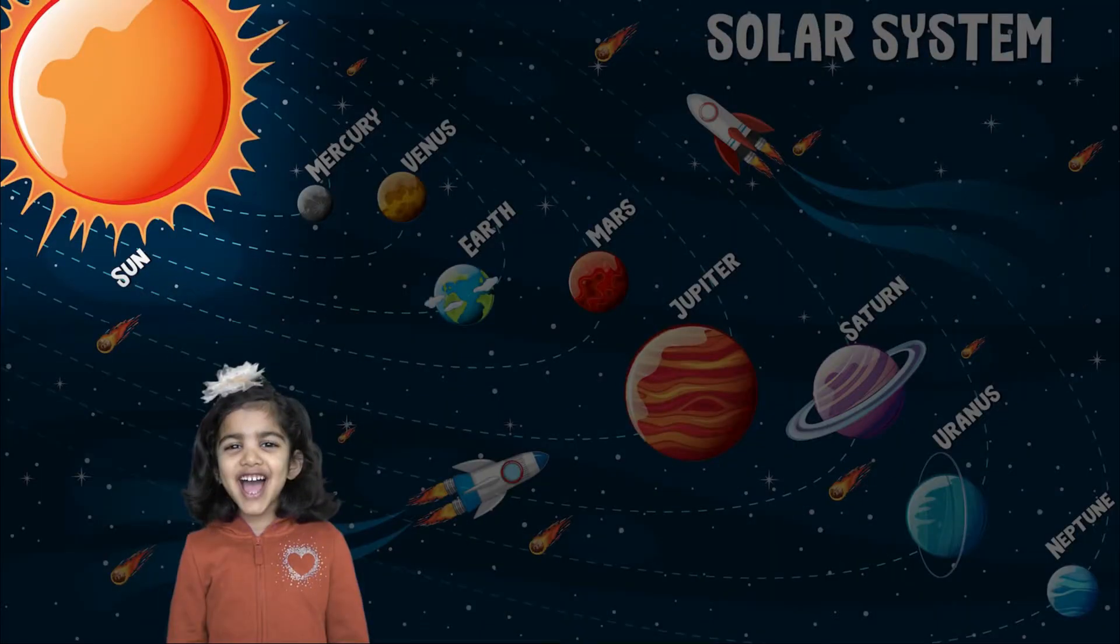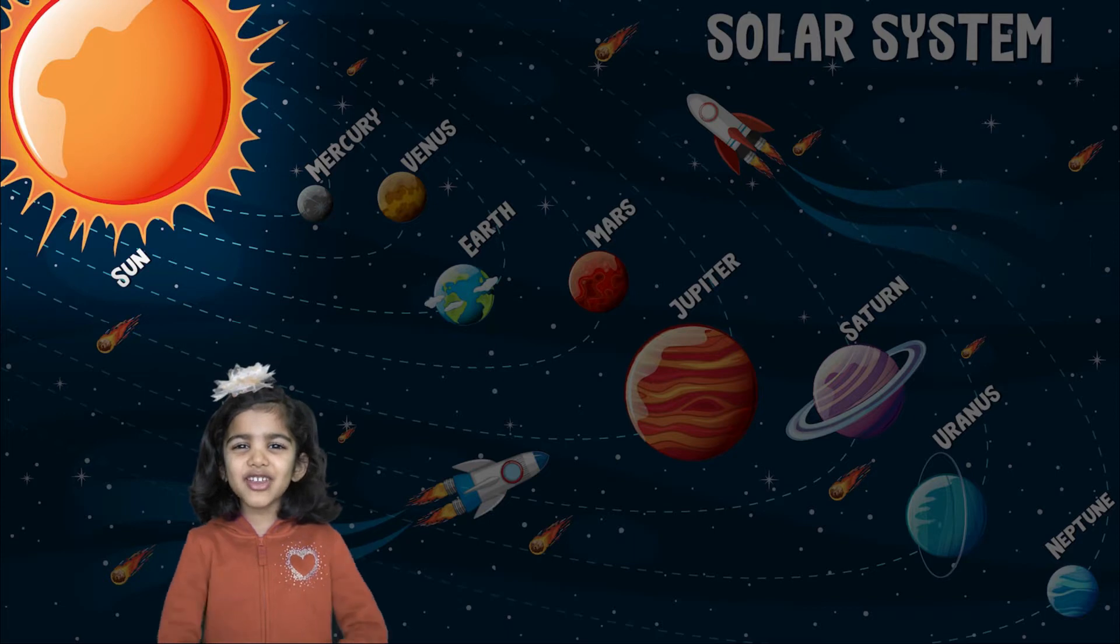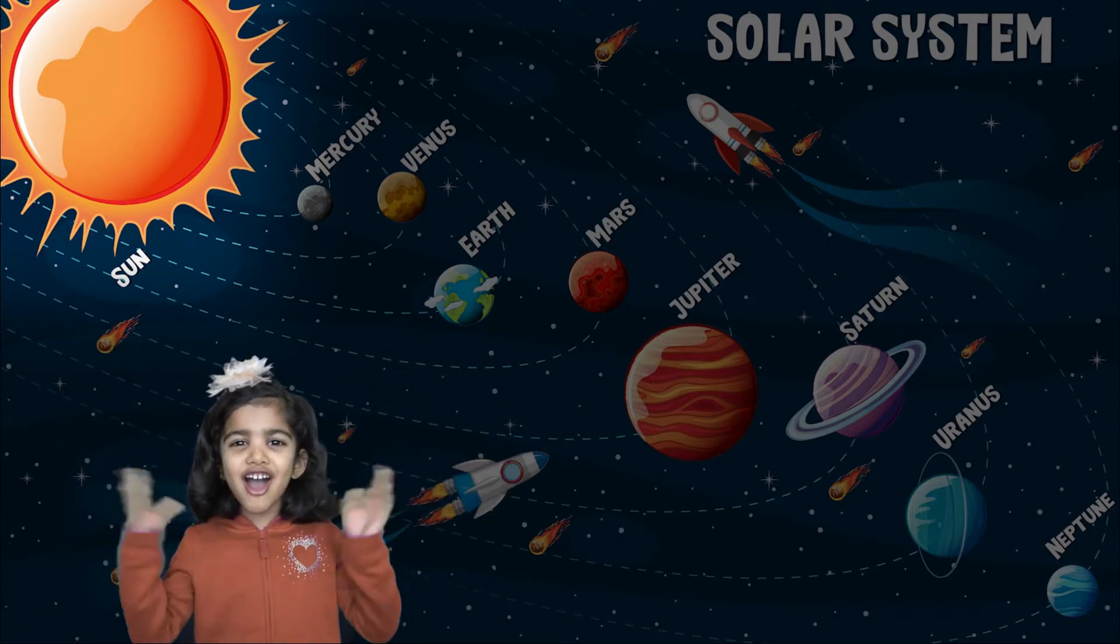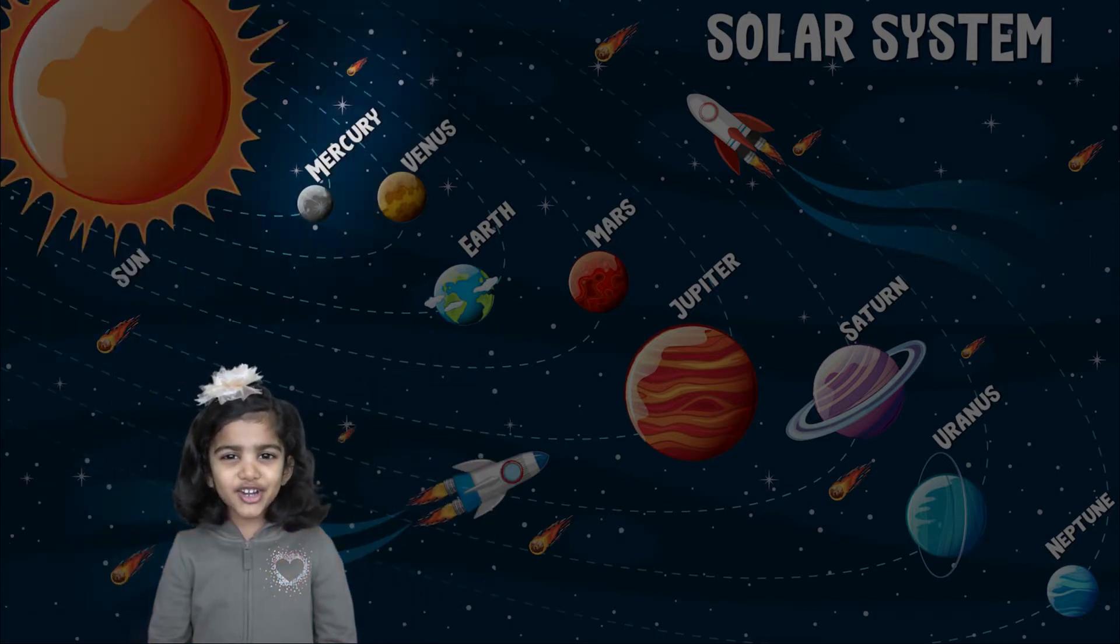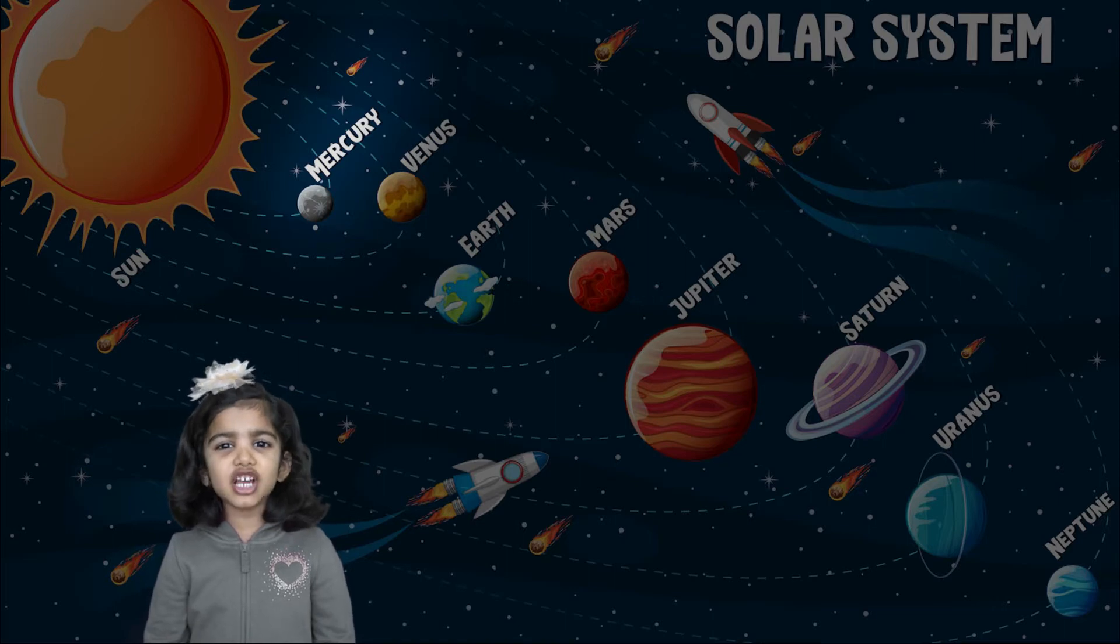Sun! The sun is very big and hot. Mercury, Mercury is the closest planet from the sun.